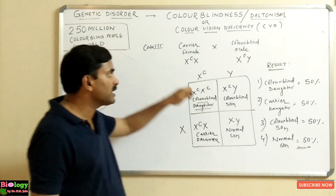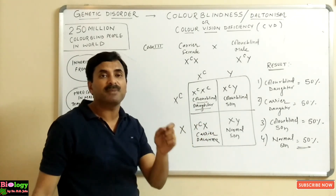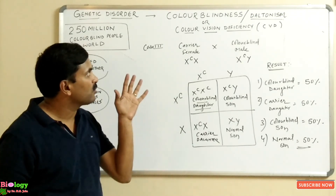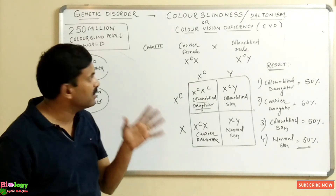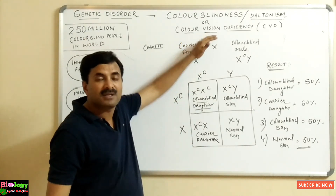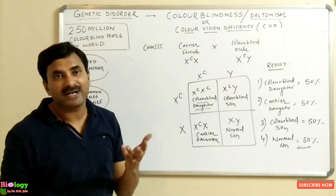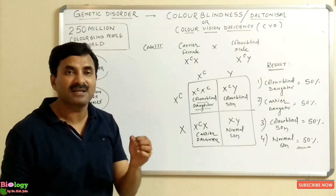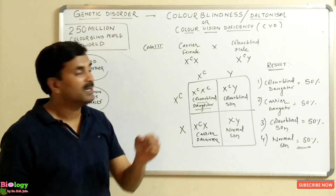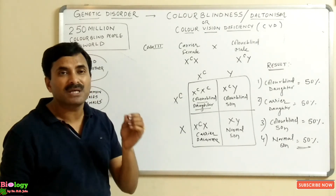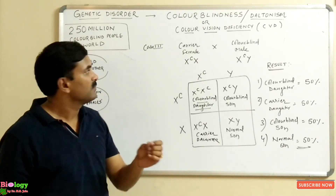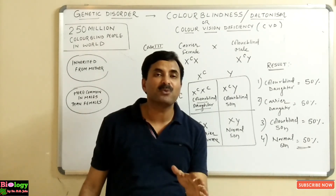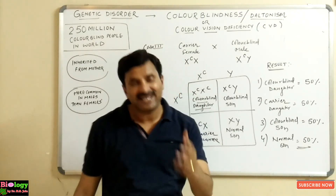These were the three types of crosses, and based on them you can solve multiple questions on colorblindness. To summarize: colorblindness is also called daltonism or color vision deficiency. The most common type is red-green colorblindness, caused by an X-linked recessive gene on the X chromosome. It is a genetic disorder and cannot be treated permanently. In the next videos, we will cover more genetic disorders.